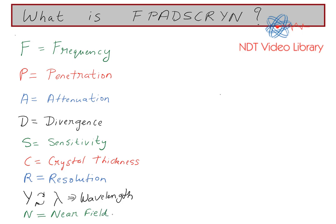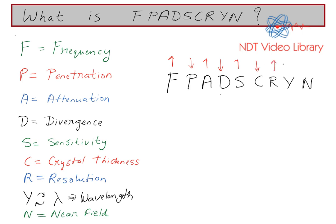What you're going to do is first write on a piece of paper FPATS CRINE, and then draw arrows in this manner — up, down, up, down, up, down — sequentially to the end. Or you can start down, up, down, up, down, up.